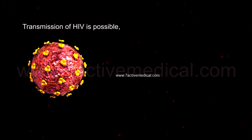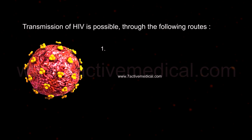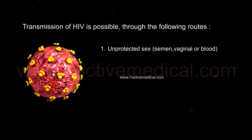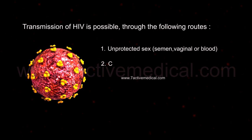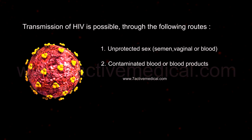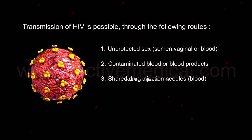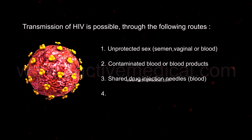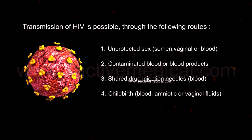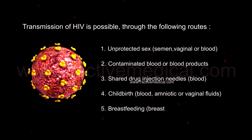Transmission of HIV is possible through the following routes: unprotected sex, via semen, vaginal fluids, or blood; contaminated blood or blood products; shared drug injection needles and blood; childbirth, through blood, amniotic, or vaginal fluids; and breastfeeding via breast milk.